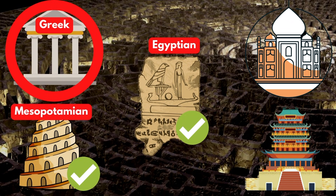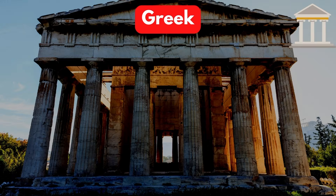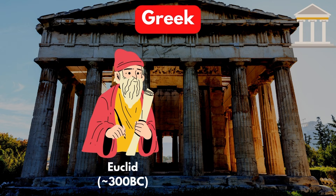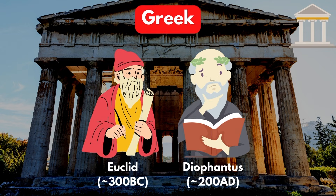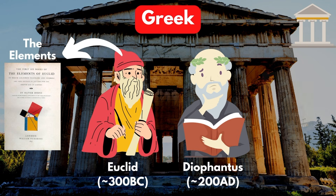The ancient Greeks who followed the Mesopotamians and Egyptians also made significant contributions to the development of algebra. The most notable of these contributions come from two mathematicians, Euclid and Diophantus, and their instrumental texts, the Elements and the Arithmetica.